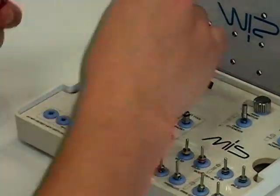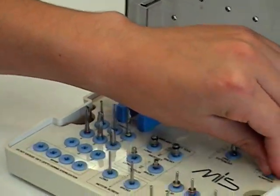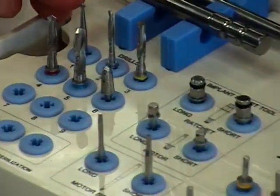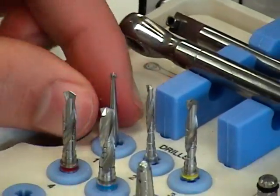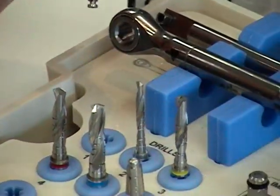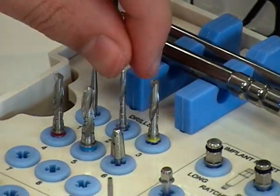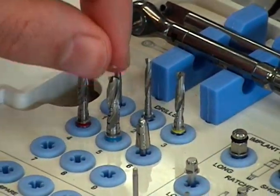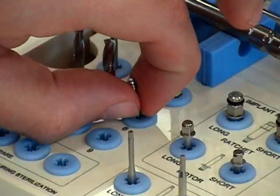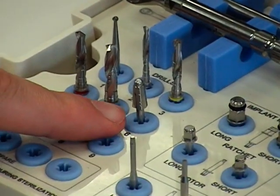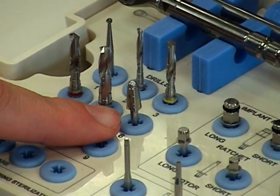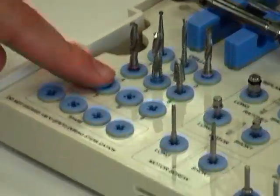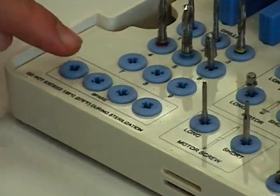Next up, we've got the drills themselves. The surgical kit that we provide comes with a marking drill, a 2.0 millimeter drill, 2.8, 3.2, 3.8, and a countersink drill for the various diameters of implants. There are additional spaces for other drills and also some spare slots.